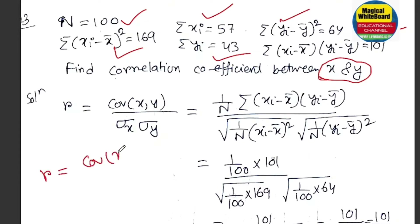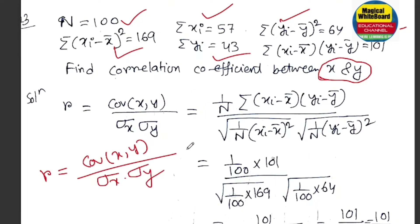Let me ask about the covariance of X and Y. The covariance formula is going to be equal to 1 by N, summation of (Xi minus X-bar).